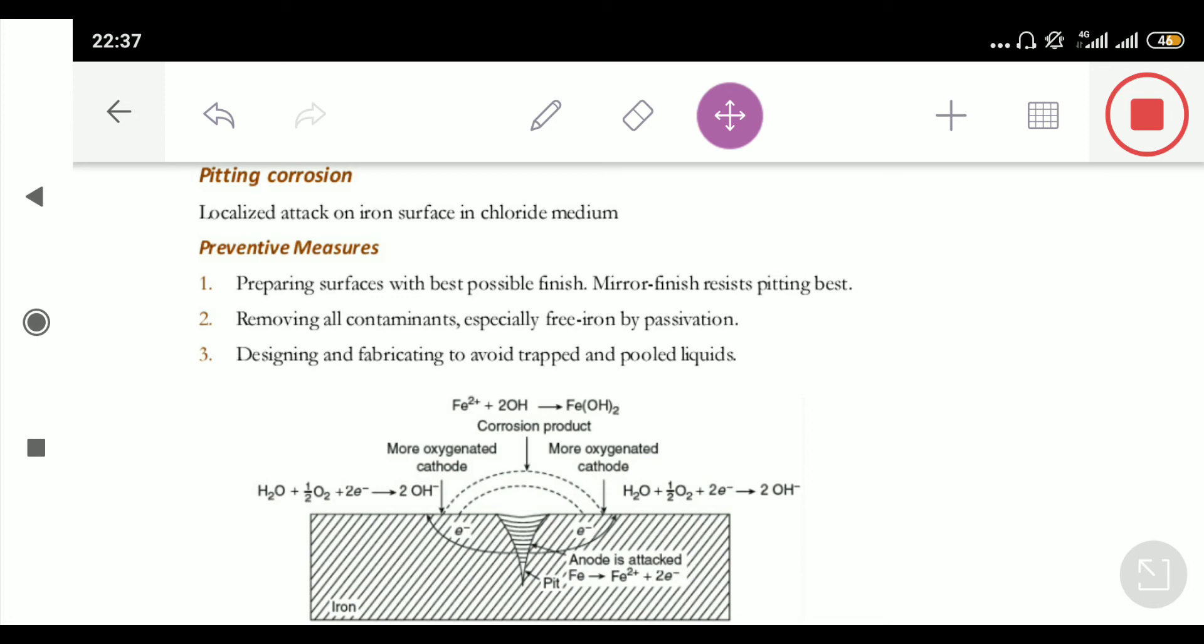in case of differential aeration corrosion, the metal which is immersed in water is surrounded by less oxygen and the part which is outside the water is surrounded by more number of oxygen.